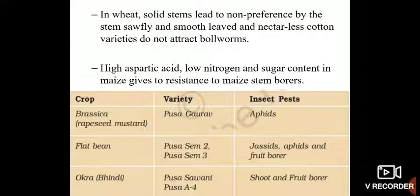This is also an important feature which helps plants to resist insect attack. A variety of wheat with solid stems will not be preferred by the stem sawfly. Similarly, if the leaves are smooth and nectarless, cotton varieties won't attract boll worms.